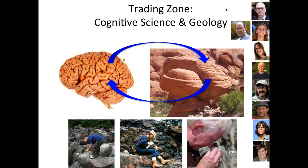The term 'trading zone' comes from the history of science. It was originally developed to refer to work done during World War Two on developing radar, where engineers and theoretical physicists were literally put in the same room to work on a common problem. The success of that approach lay partly in presenting theorists with a concrete problem, which allowed them to test how well-specified their theory was. The analogy here is that we are taking cognitive science theories and testing whether they can tell us precisely what needs to be done in a classroom when a student is struggling.